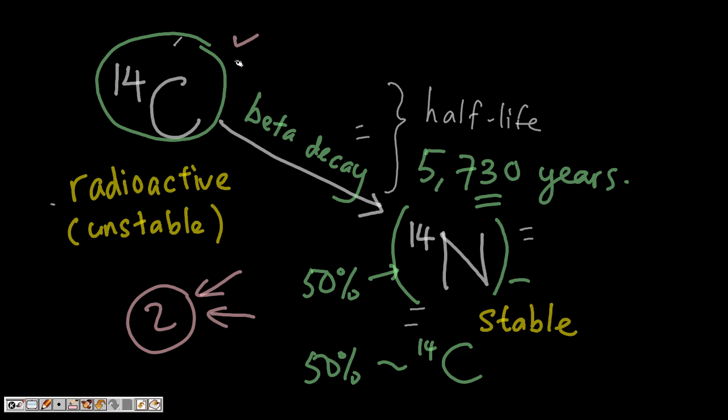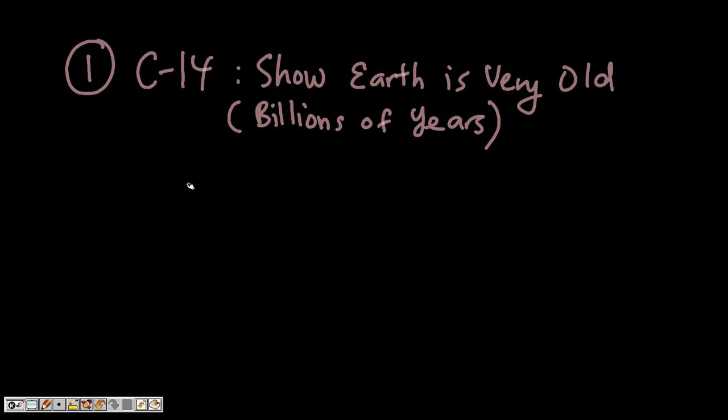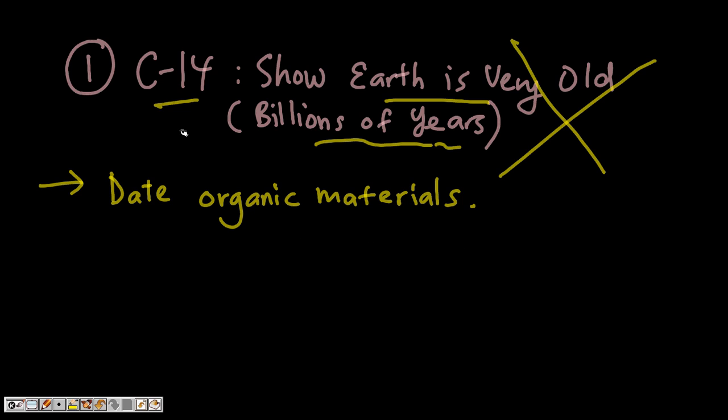The first misconception is this: carbon-14 dating shows that the earth is very old, i.e., it is billions of years old. Now this is absolutely not true. This is because carbon-14 is used only to date organic materials - that means once living things. It cannot be used to date rocks, only organic materials.